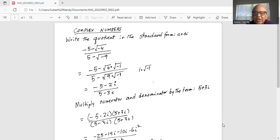This can be simplified as the numerator minus 5 minus square root of minus 4. We can write as square root of 4 times square root of minus 1. Similarly, the denominator becomes 5 minus square root of 9 times square root of minus 1. Now square root of minus 1 is i, imaginary number.